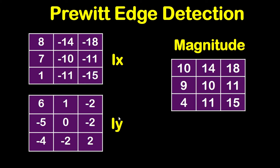Now after getting Ix and Iy, we will get the magnitude matrix. To get the magnitude matrix we do the following: √(8² + 6²) = 10, and √((−14)² + 1²) = 14.